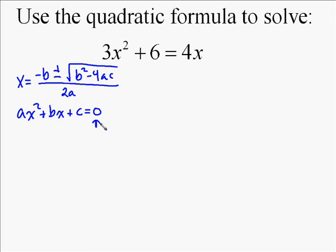Notice that where the a, b, and c come from is ax squared plus bx plus c equals 0. And it doesn't work unless you have equal 0.